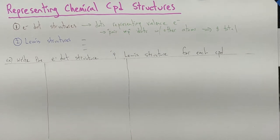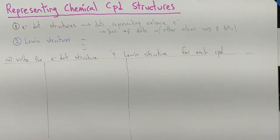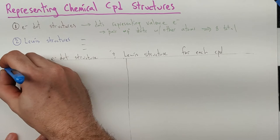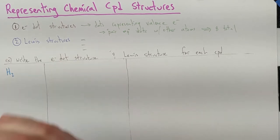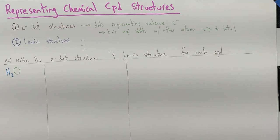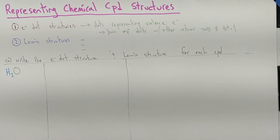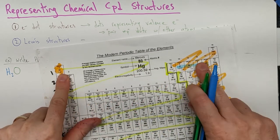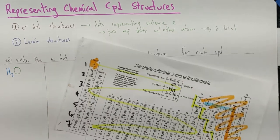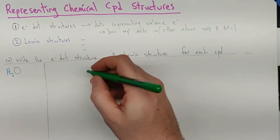A compound I always like to start with, because it's something people are familiar with, is H₂O. I'm going to try to color code the electrons so when we're pairing up the dots it makes sense. Hydrogen is in group one — it gets one dot. Oxygen is in group 16 — it gets six dots. Those are our valence electrons. I'll draw the oxygen first, one dot on each side before any side gets two.